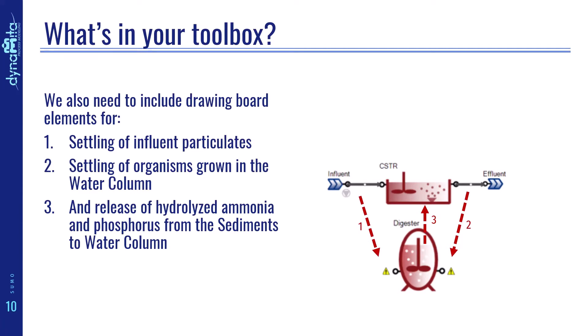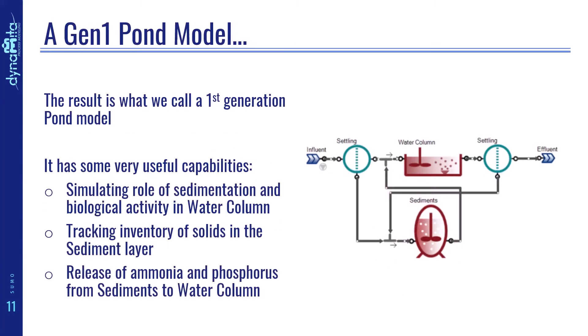Settling of organisms that were grown in the water column, and release of hydrolyzed ammonia and phosphorus from the sediments to the water column. The result is what we call a first-generation model. It has some very useful capabilities.